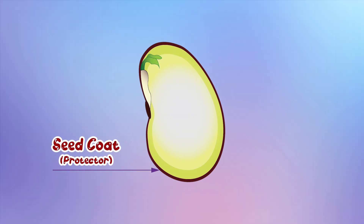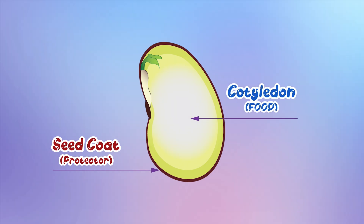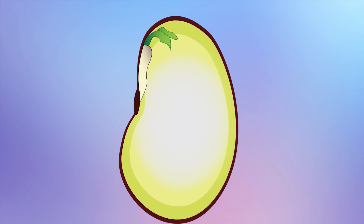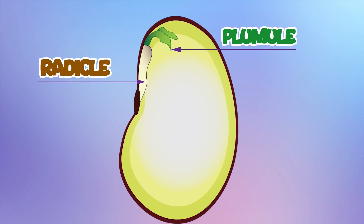This is the cotyledon. It is the food for the baby plant. And this is the embryo — this is the baby plant. The embryo has two parts: the radicle and the plumule.